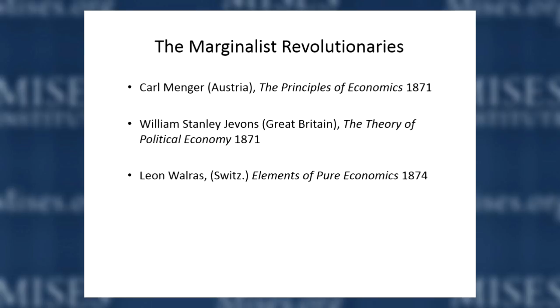The three people who simultaneously but independently discovered this principle were: Carl Menger, in his book in 1871; William Stanley Jevons, who also wrote a book in 1871 in Great Britain; and finally in 1874, Leon Walras, who was a Swiss-French economist, also developed the principle.